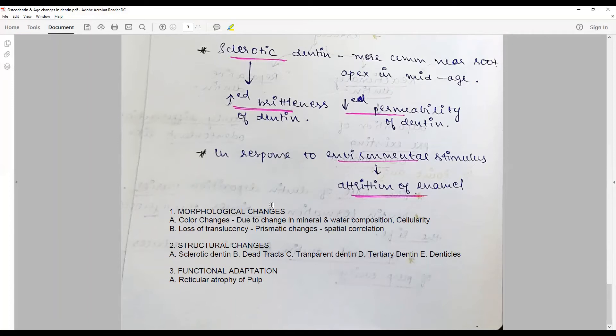The structural changes that happen with age include the appearance of sclerotic dentine, appearance of dead tracts, transparent dentine, and tertiary dentine, and formation of pulp stones or denticles. Functional adaptations include reticulate atrophy of pulp and pulp stones.